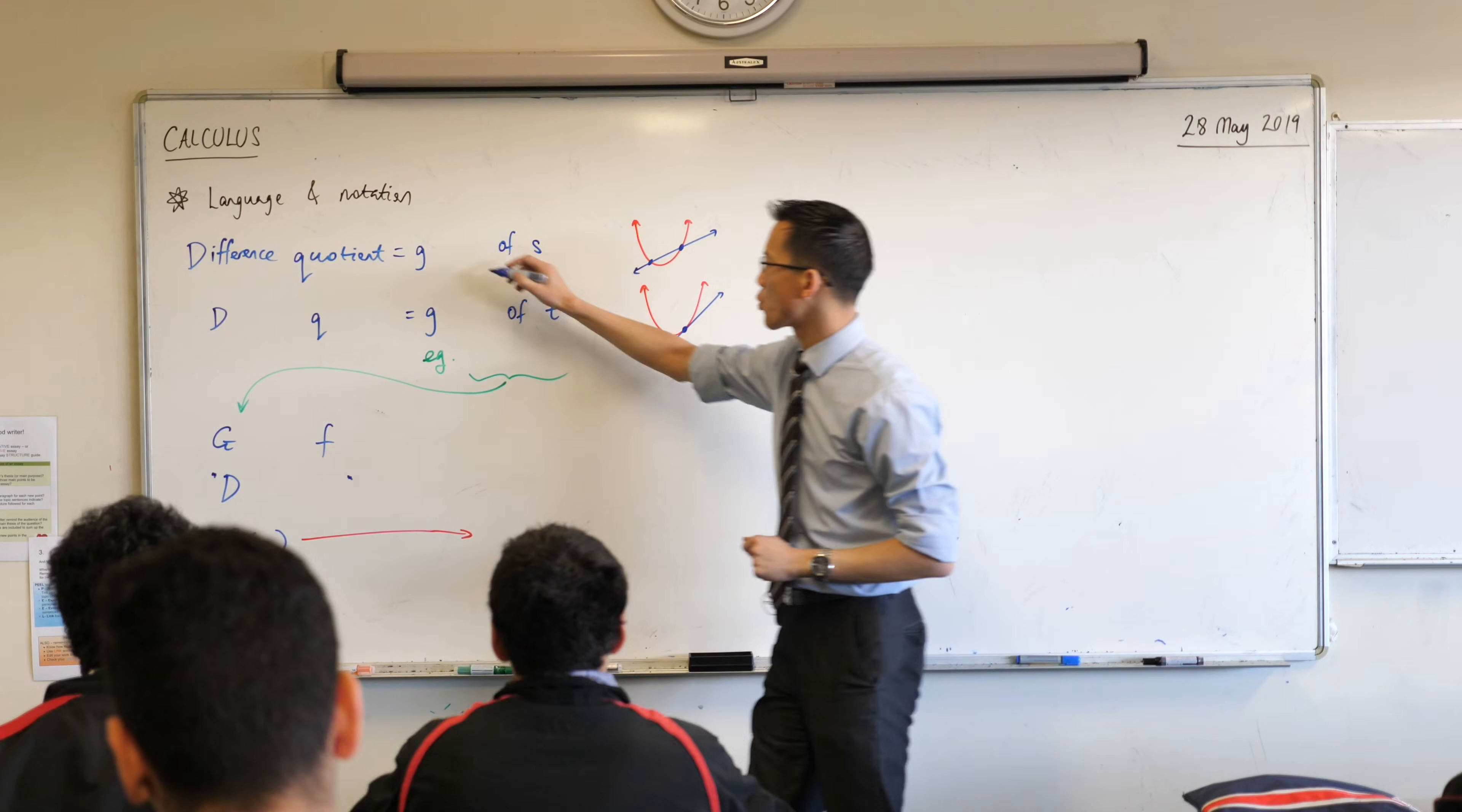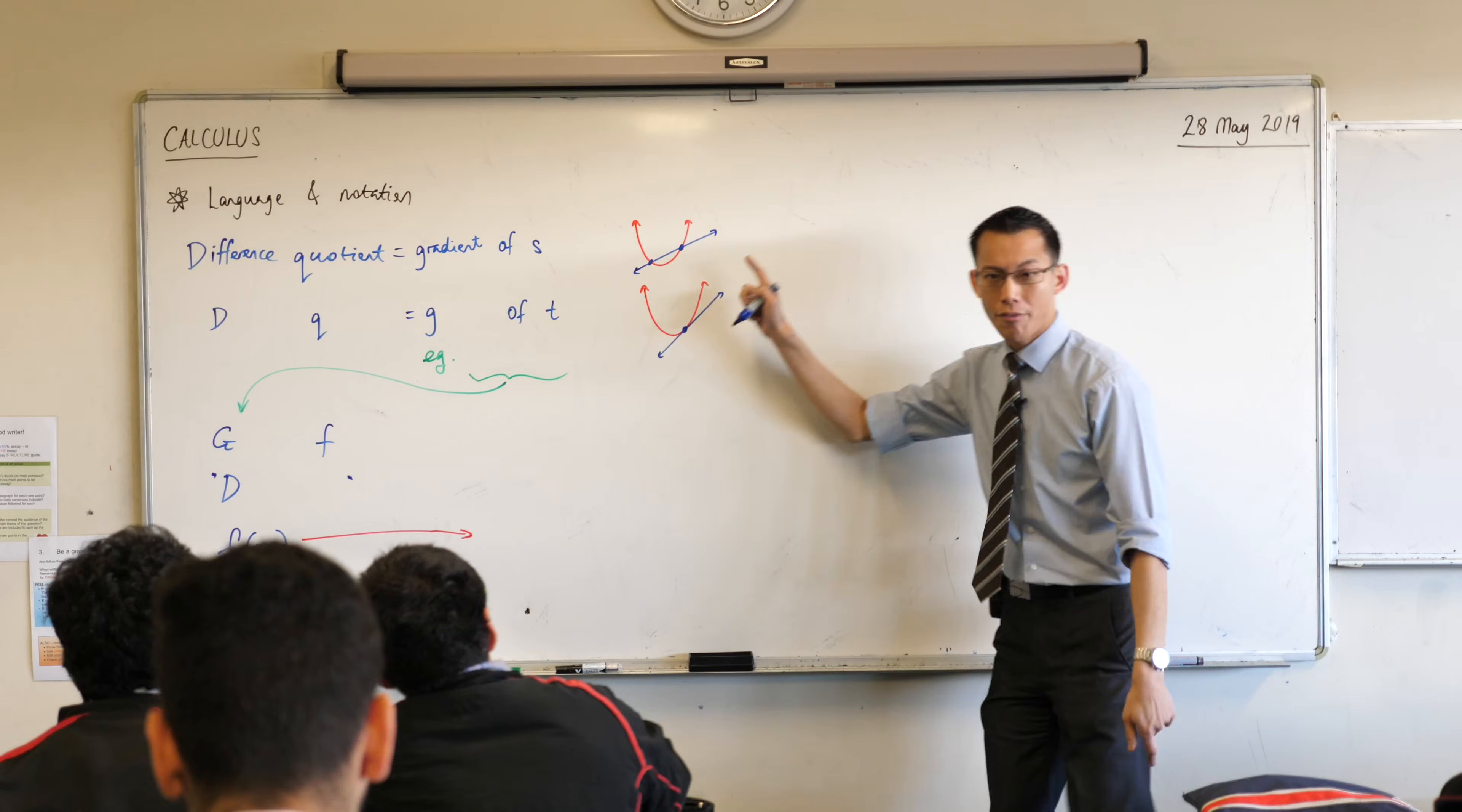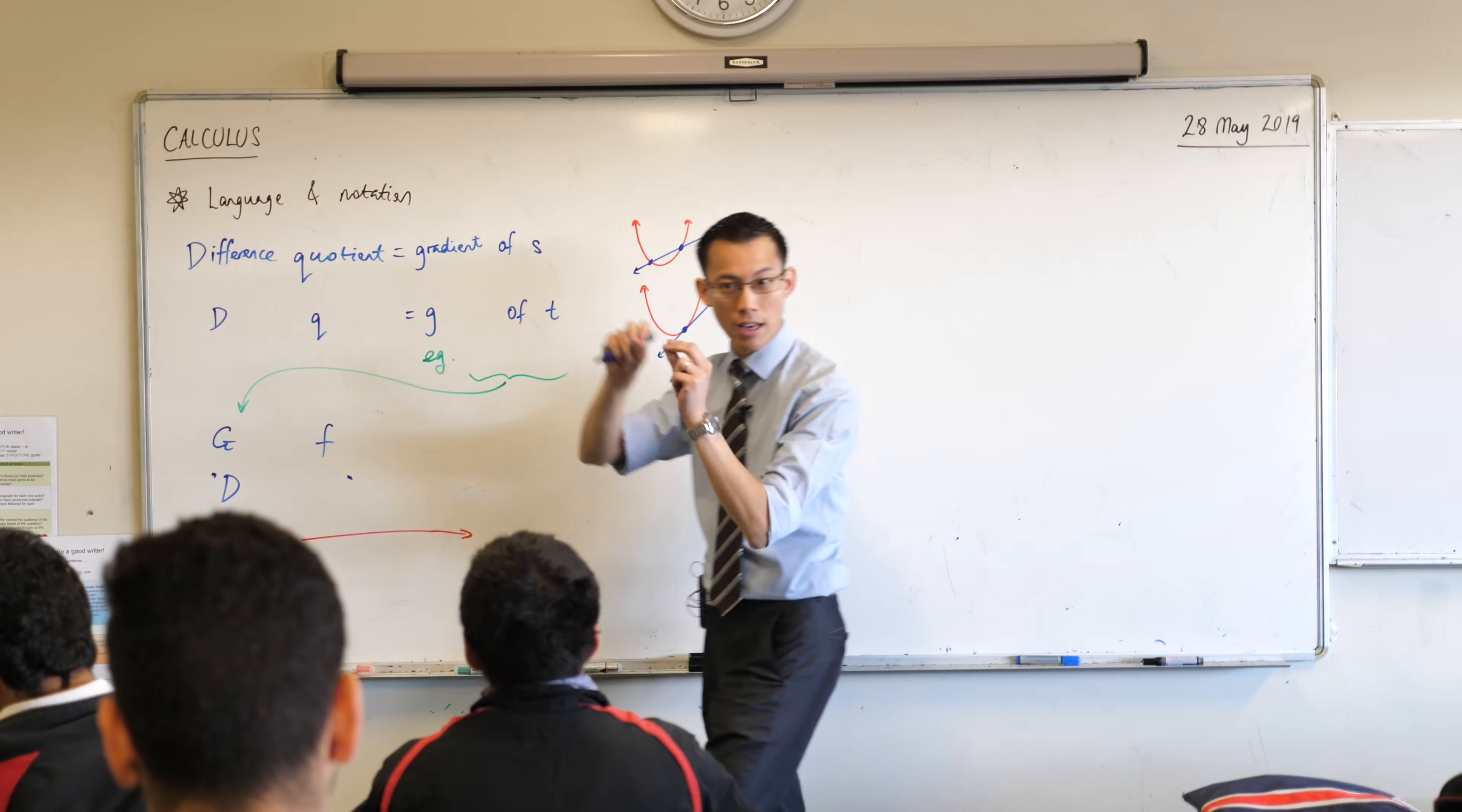So, we did say, it is a gradient, but it's not just any gradient, it's the gradient of this line that cuts your particular function, your particular graph, at a couple of spots. What do we call that kind of line?